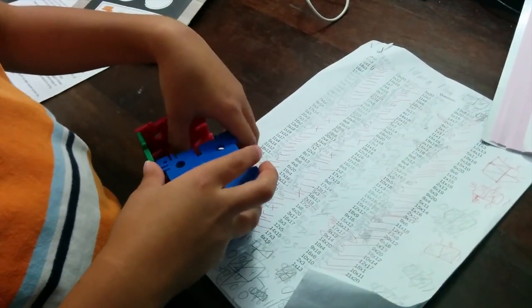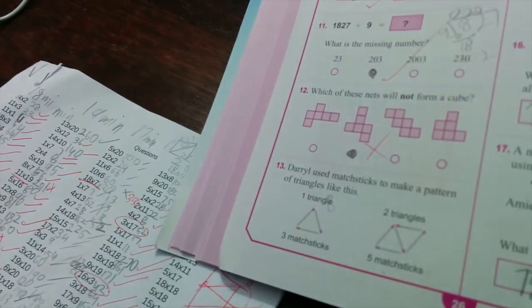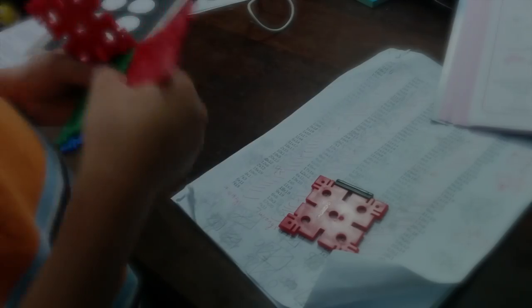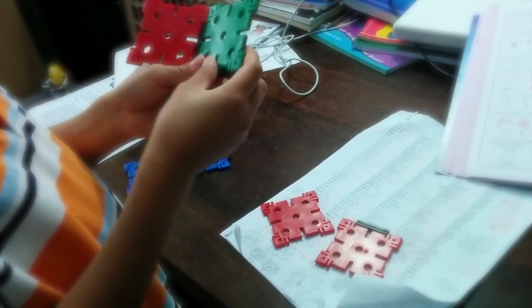That folds up beautifully into a cube. So try the third one. You can get Clicko and similar toys from Amazon.com.